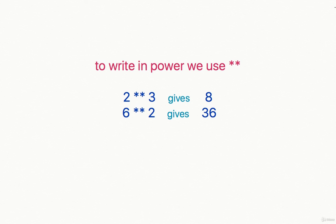To write in power, we can use double asterisk. So 2 double asterisk 3 gives 8, that is, it multiplied 2 three times. Similarly, 6 double asterisk 2 gives 36, as it multiplied 6 two times.